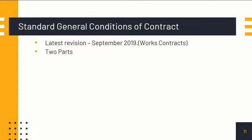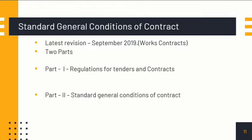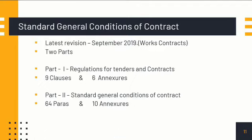The GCC for works contracts consists of two parts. Part 1: Regulations for Tenders and Contracts, consisting of 9 clauses and 6 annexures. Part 2: Standard General Conditions of Contract, consisting of 64 paragraphs and 10 annexures.